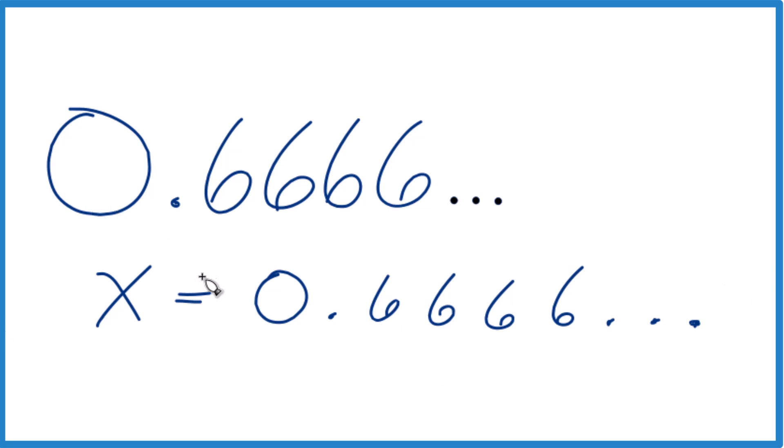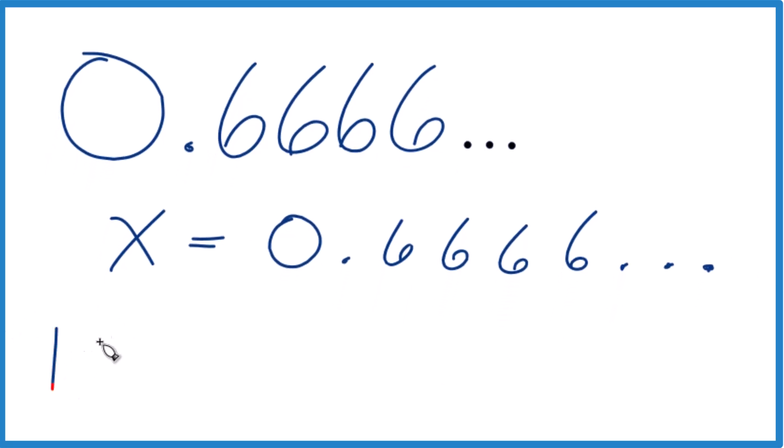But we have to do that to both sides. This is algebra. So 10 times x, that's 10x, and then 10 times 0.6666 repeating is 6.6666 repeating.